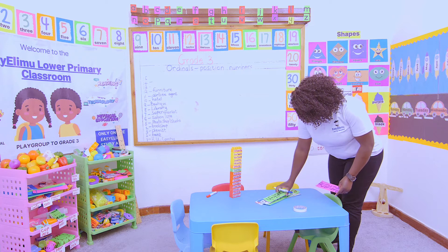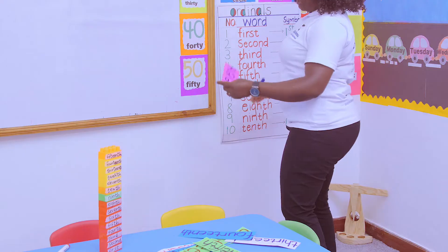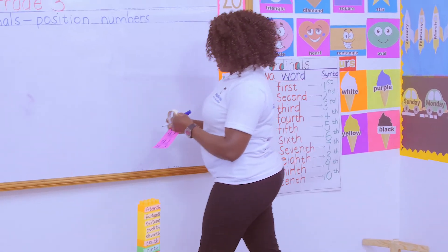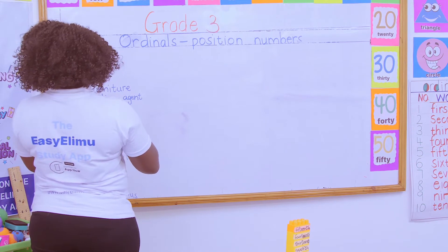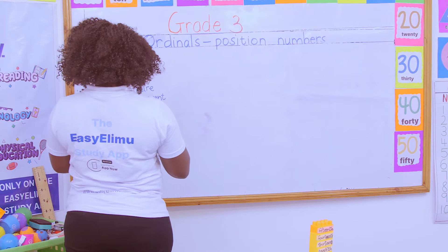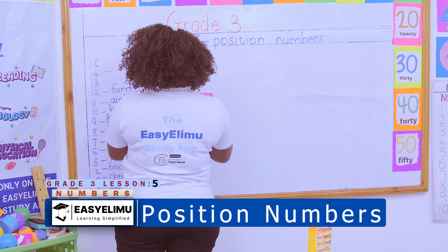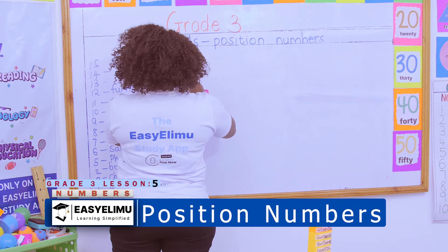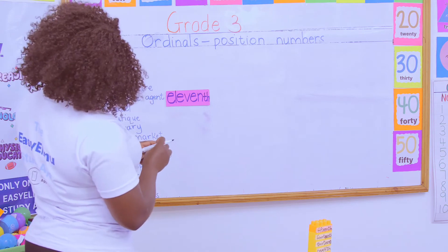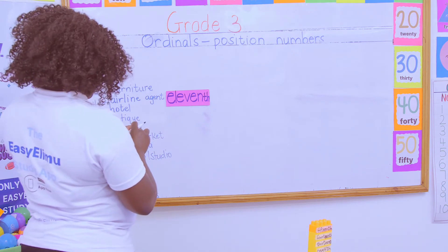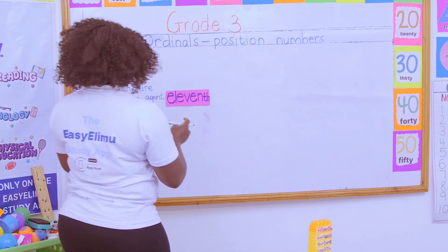I helped the class label the building. When you look at the first floor, that is the floor almost to the ground. The eleventh floor is the one that had the airline agent.